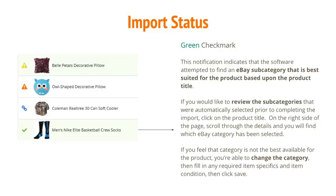The green checkmark notification indicates that the software attempted to find an eBay subcategory best suited for the product based upon the product title. If you would like to review the subcategories that were automatically selected prior to completing the import, click on the product title. On the right side of the page, scroll through the details to find which eBay category has been selected. If you feel that category is not the best available, you are able to change the category, fill in any required item specifics and item condition, then click save.